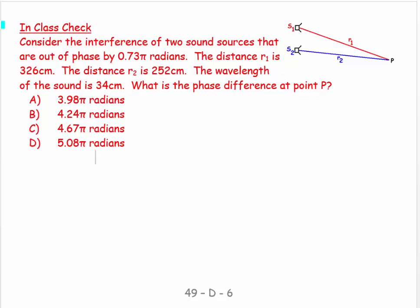Consider the interference of two sound sources that are out of phase by 0.73π radians. If there's a wave from wave one and 2π is a full wavelength, 0.73 is a little bit out. So the next wave will be just that little bit behind. These two waves, they're not quite lined up. One crest will be slightly behind the other crest, or one high pressure wave will be slightly in front of the next high pressure wave.